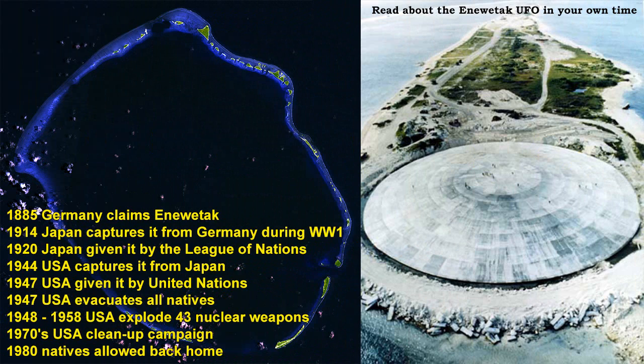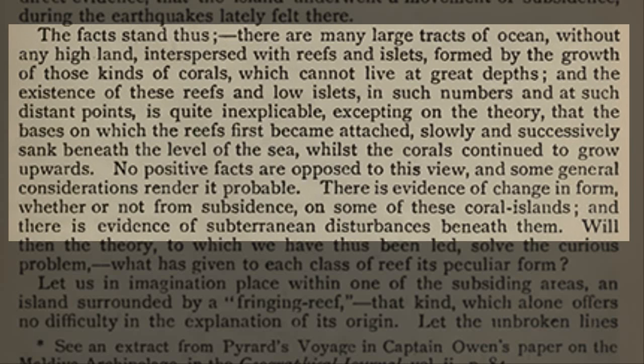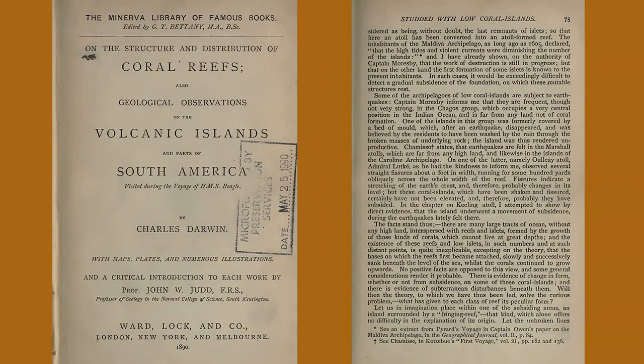Eniwetak is another of those picturesque paradise spots which was inhabited for a few thousand years before Europeans arrived and decided no one owned it. As we have seen, as early as 1842, Charles Darwin had published his hypothesis on coral atolls and stated: 'There are many large tracts of ocean without any high land interspersed with reefs and islets, formed by the growth of those kind of corals which cannot live at great depths. And the existence of these reefs and low islets in such numbers and such distant points is quite inexplicable, excepting on the theory that the bases on which the reefs first became attached slowly and successively sank beneath the level of the sea whilst the corals continued to grow upwards.'